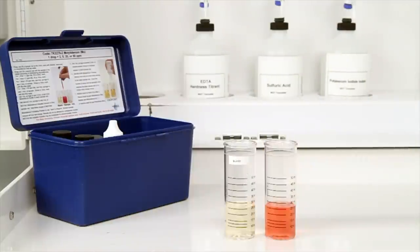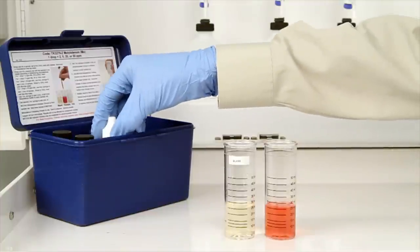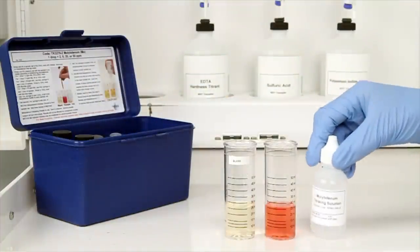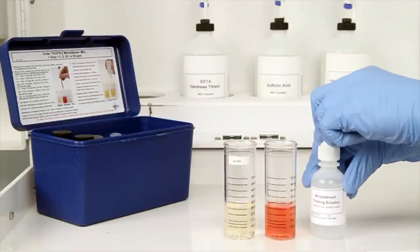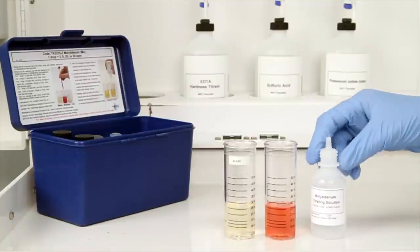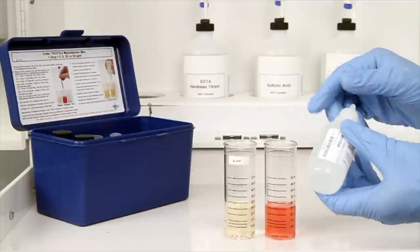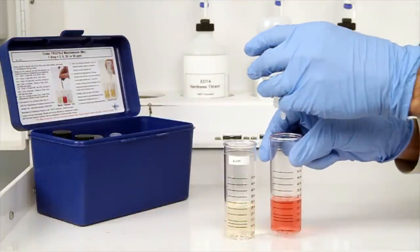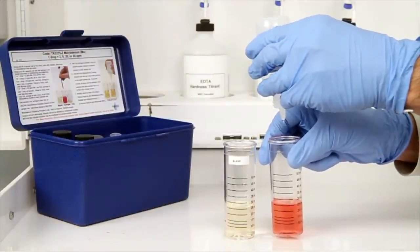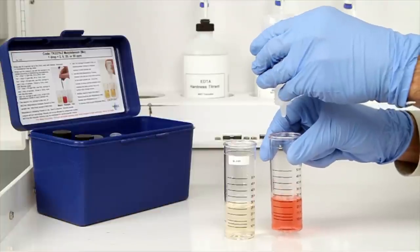The next step according to the endpoint ID procedure is to perform the titration. It's important to make sure you have the proper titrant and the proper sample size for this titration. Add the molybdenum titrating solution one drop at a time to the vial containing your sample. Count the number of drops during this step.